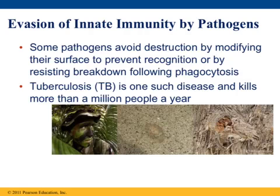Sometimes you're sick for weeks because some pathogens can still avoid destruction. They do this by camouflaging themselves — modifying their surface so they don't present antigens that signal they shouldn't be there — and then resisting phagocytosis. If they blend in and look like they're supposed to be there, no one asks questions. A good example is tuberculosis, which is one reason it still kills about a million people a year even with modern technology and medicine.